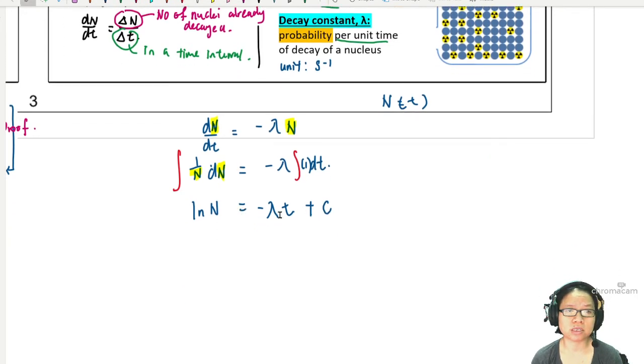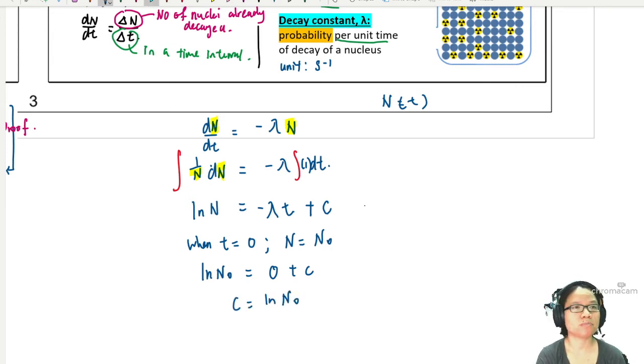Now I can insert the initial condition. I know when t equals 0, N equals N naught. So, I'm going to plug that in. I will have ln N naught equals 0 plus c. So, c is ln N naught. I have found my constant. My constant c is ln N naught, and I can put it back into the equation.